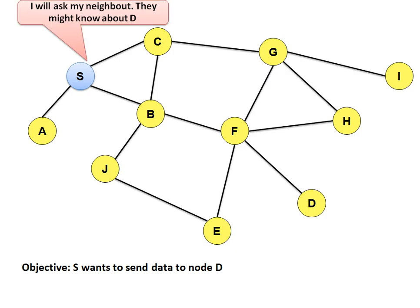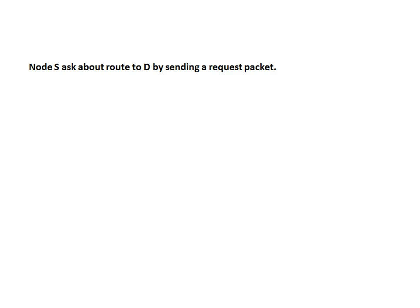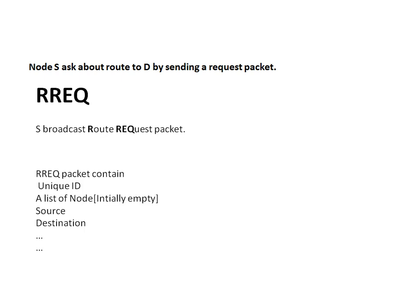S is already connected to nodes A, B, and C. So what S will do is ask its neighbors about node D. For this purpose, S will create a packet known as a Route Request packet. The content of this packet includes a unique ID given to the packet. This ID is helpful to avoid duplicate packet reception — if a node receives multiple copies of the same packet, it can discard them.